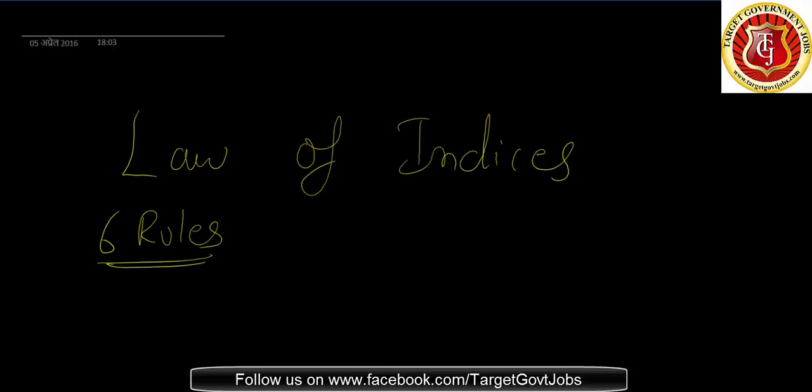Welcome to Target Government Jobs. Today we are going to cover the Law of Indices topic. It is very important from a simplification and approximation perspective — if something raised to something comes in your simplification or approximation calculation, you get confused about what to do exactly. The six rules are important from a basic perspective. This series is completely dedicated for this, so you have to go through these tutorials to get a good hold on basics of simplification and approximation.